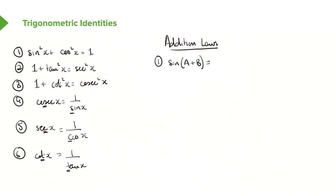So sin(A+B) gives us sinA cosB plus sinB cosA. This is our first addition law.